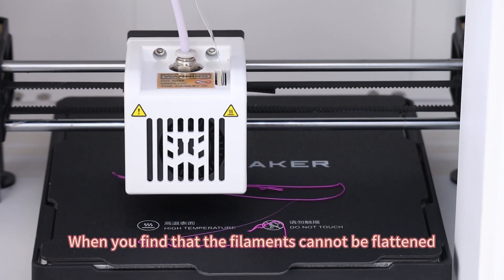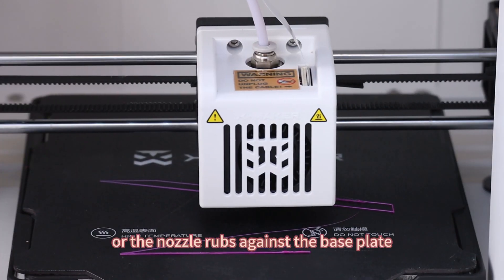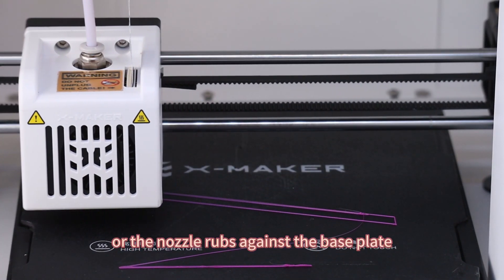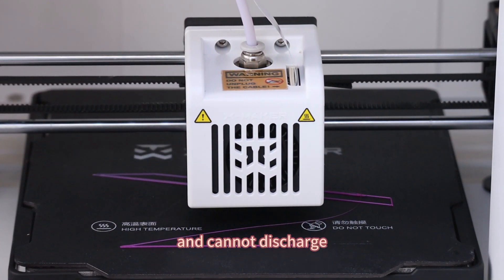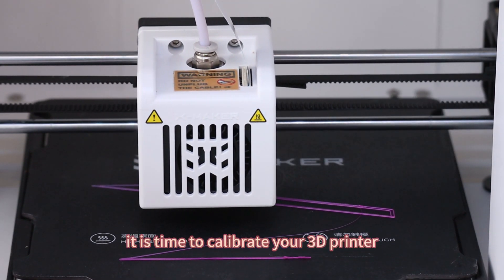When you find that the filaments cannot be flattened on the base plate, or the nozzle wraps against the base plate and cannot discharge, it is time to calibrate your 3D printer.